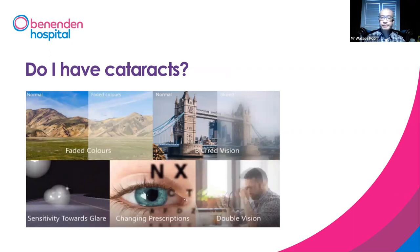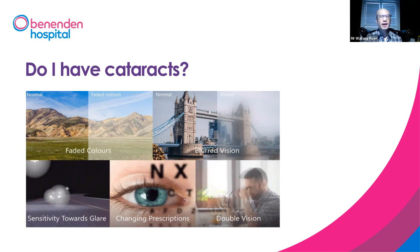Do I have cataracts? There are certain symptoms which are common with cataract. For example, colour becomes faded, things become blurry. Especially when driving at night, oncoming traffic light causes a lot of glare. Or you keep going to the optician thinking the glasses are not right — needing stronger and stronger glasses — because the cataract is progressing, making you more short-sighted. Or the patient can have ghost vision or double vision, seeing multiple images because of the cataract causing diffraction when light enters the eye.